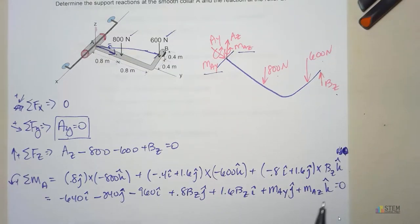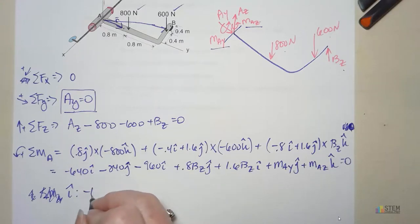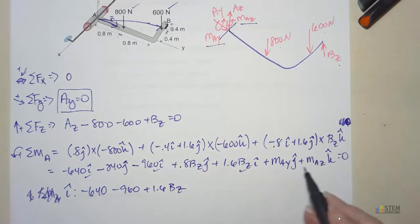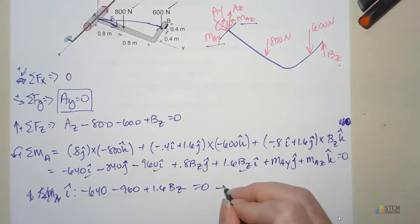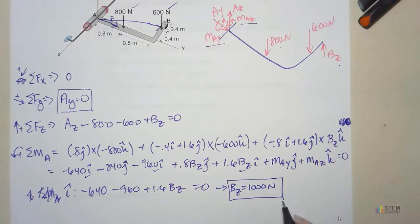We have several components here. We've got K, J, and I. We can group up the like components, and that's going to give us three equations that we can use to solve. Let's just put I. That'll make more sense. So the I terms, we've got negative 640 minus 960, and then plus 1.6 BZ. So this equals 0. Now with this we can find BZ. So BZ is 1,000 Newtons, and it's positive, so pointing upward was correct, which is what we would expect when you have a mass resting on top of that roller.